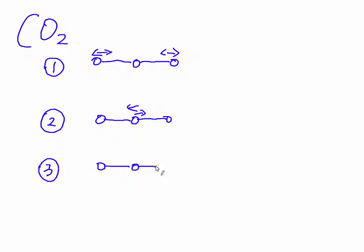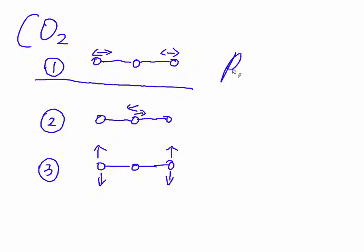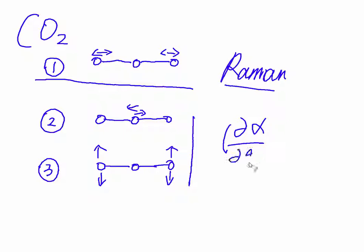The third vibrational mode involves the oxygen atoms doing a scissoring or bending movement. Here, only the first vibrational mode can generate a Raman signal. For modes 2 and 3, the polarizability is zero, so there is no Raman activity.